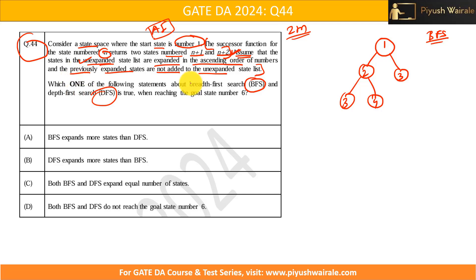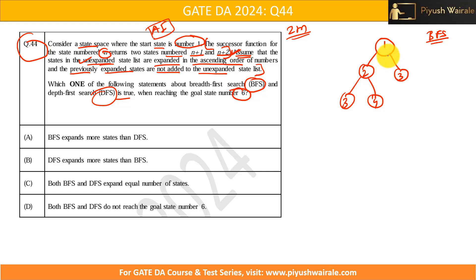Which one of the following statements about breadth first search and depth first search is true when reaching the goal state number 6? We need to apply both BFS and DFS to this state space and observe the results.